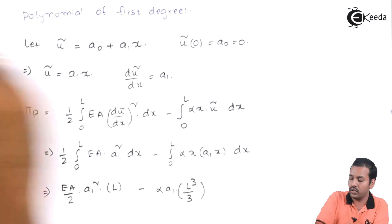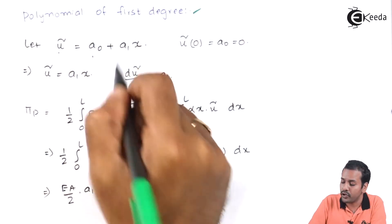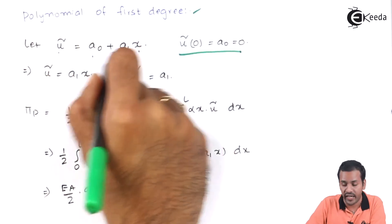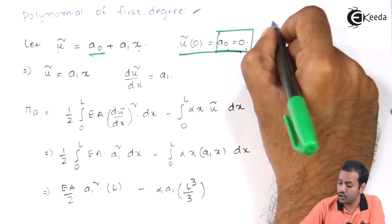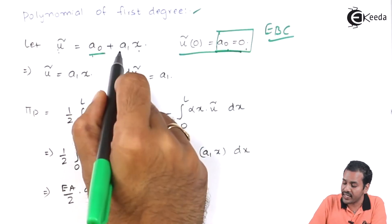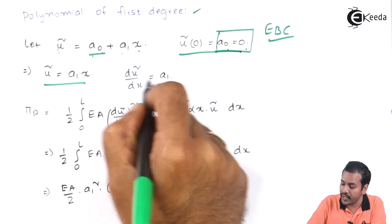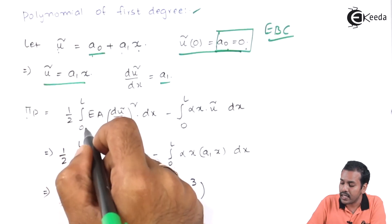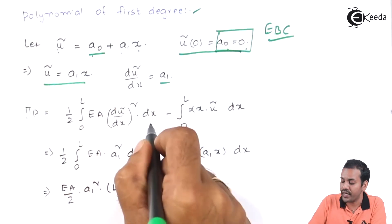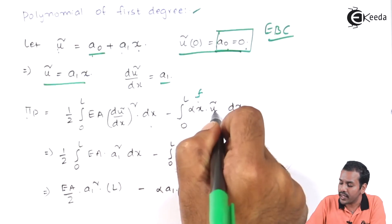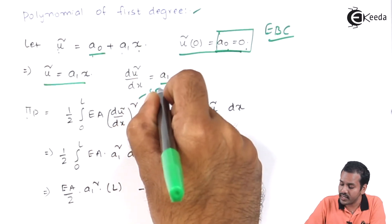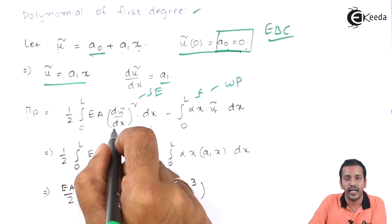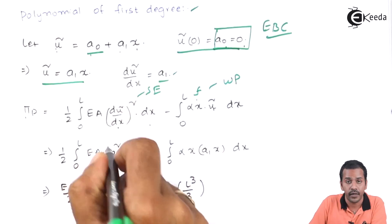Now let us try polynomial of first degree: u-tilde = a₀ + a₁ x. Applying the essential boundary condition u-tilde(0) = 0 gives a₀ = 0. So u-tilde = a₁ x, and du-tilde/dx = a₁. The potential energy for this problem is pi_p = one-half integral from 0 to L of EA times (du/dx)² dx minus the integral from 0 to L of f times u-tilde dx, where f = alpha x.